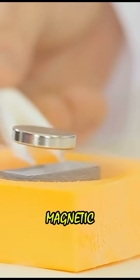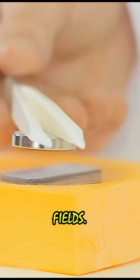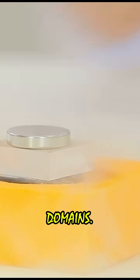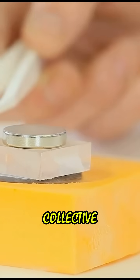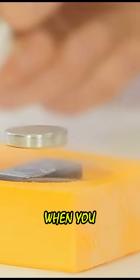Magnets are made up of atoms that have magnetic moments, which are essentially tiny magnetic fields. These atoms are organized into regions called magnetic domains. When these domains are aligned, they create a strong collective magnetic field, which is what gives a magnet its strength.